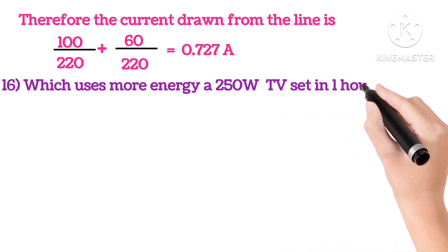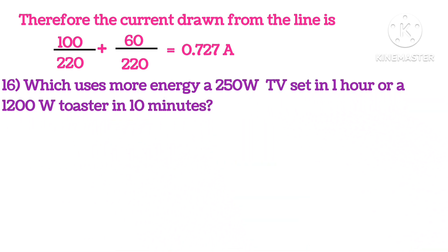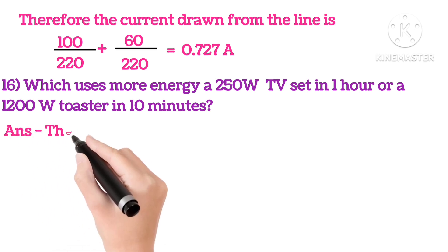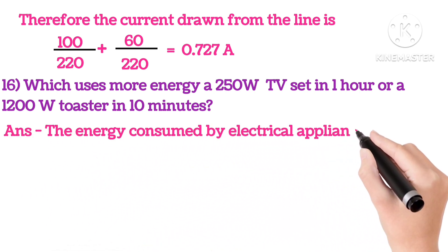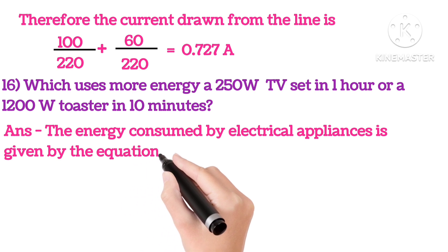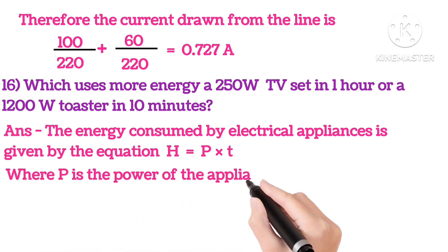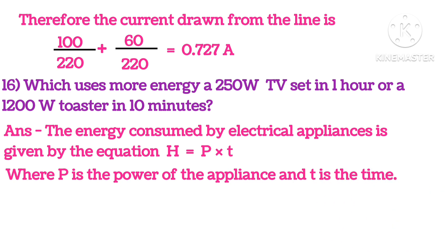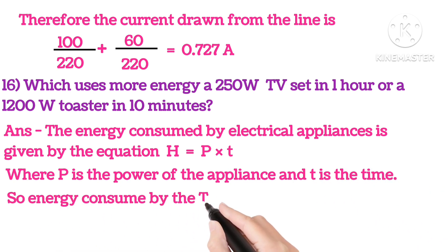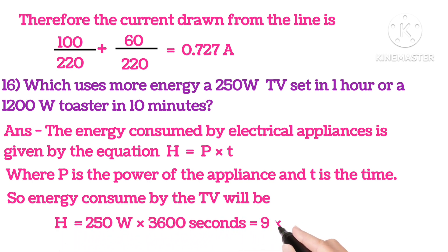16th: which uses more energy? A 250 watt TV set in 1 hour or a 1200 watt toaster in 10 minutes? The answer is: energy consumed by the electrical appliances is given by H equals P into T, where P is the power of the appliance and T is the time. So energy consumed by the TV, putting in the values for 1 hour, we write 3600 seconds, so 9 into 10 to the power of 5 joules.